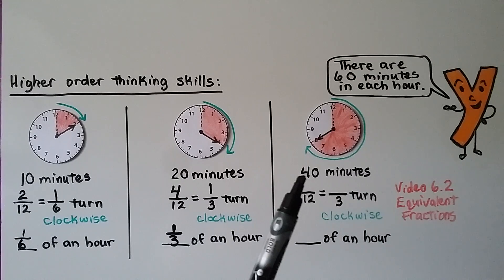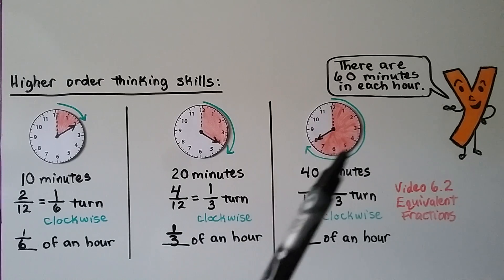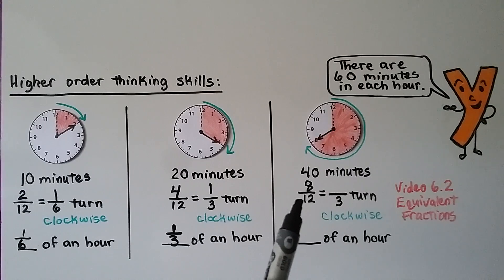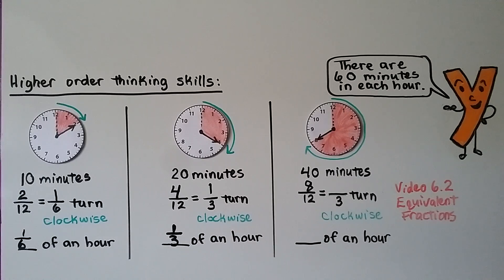What about this one? It's 40 minutes elapsed. How many-twelfths of an hour is that? It's pointing to the 8 out of 12 numbers — that would be eight-twelfths. And how many-thirds would that be equal to? We do 12 divided by 4 to get 3, and 8 divided by 4 equals 2 — that would be two-thirds turn clockwise. And what fraction of an hour? It would be eight-twelfths, but in simplified form, two-thirds of an hour.